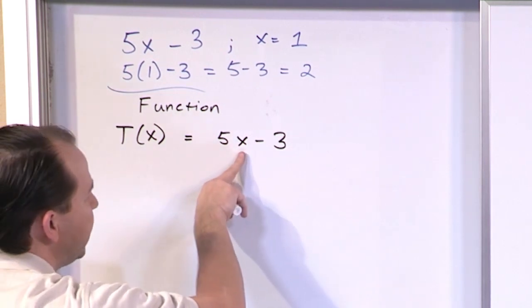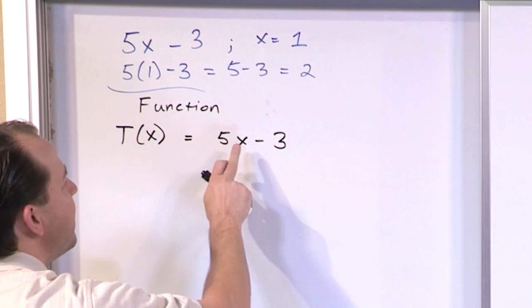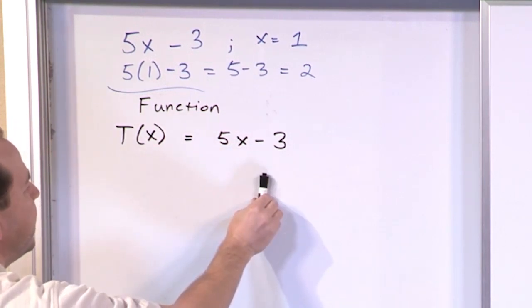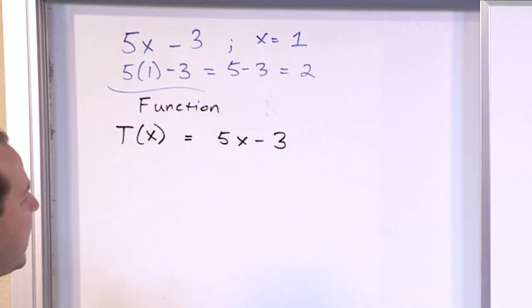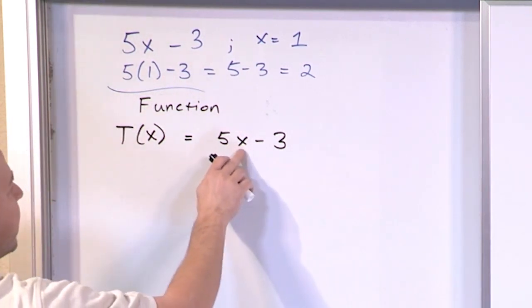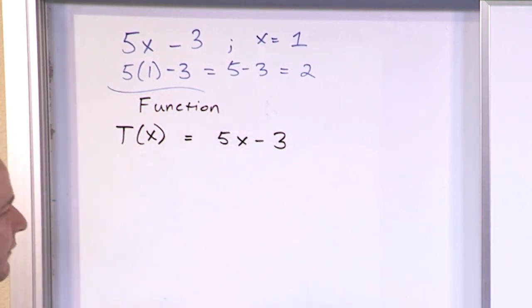If I put x is equal to one in here, five times one is five minus three is two. That means that at x is equal to one, when I go to one centimeter to the right, the temperature is going to be two degrees. And so, I can plug in different values of x and put them in here and calculate different values of temperature because that's what I've actually defined this function to represent.